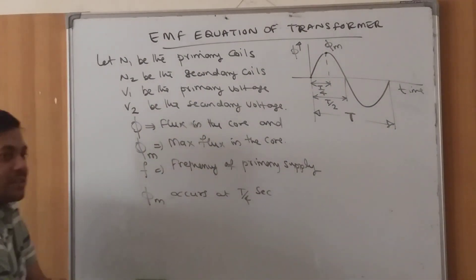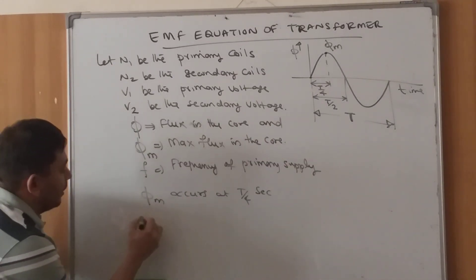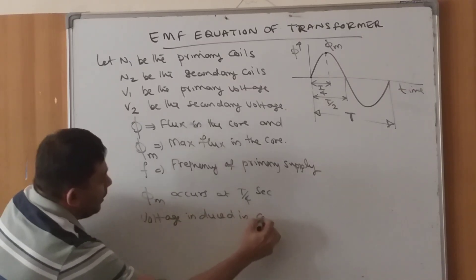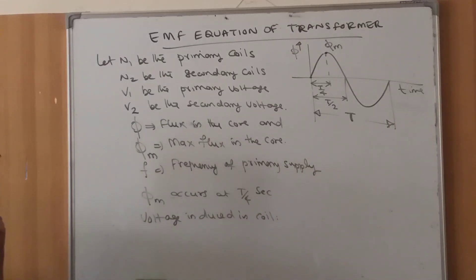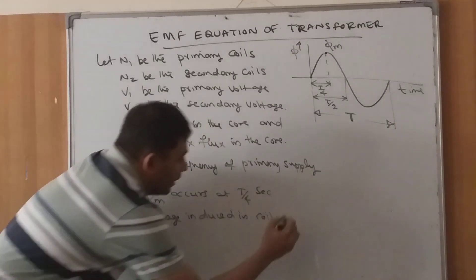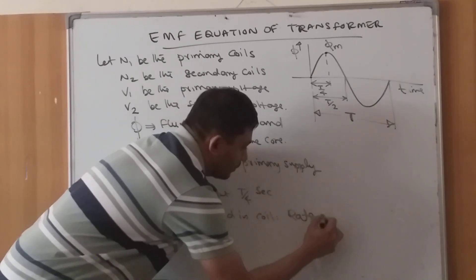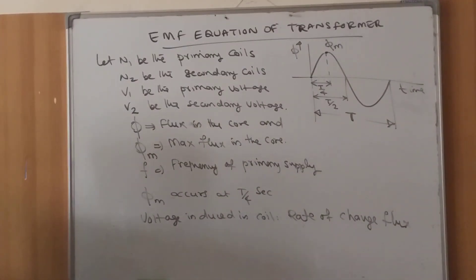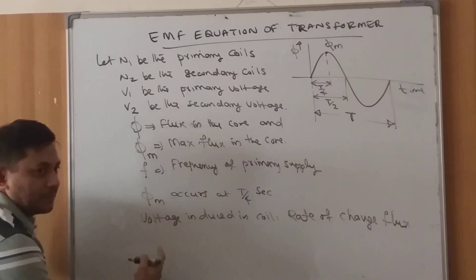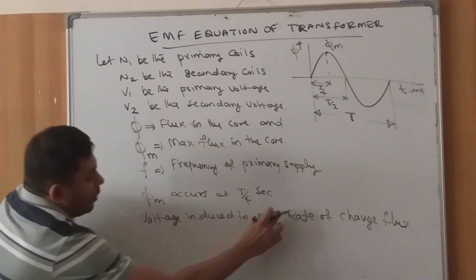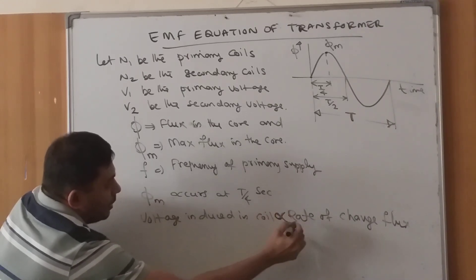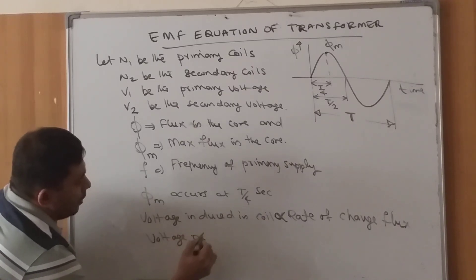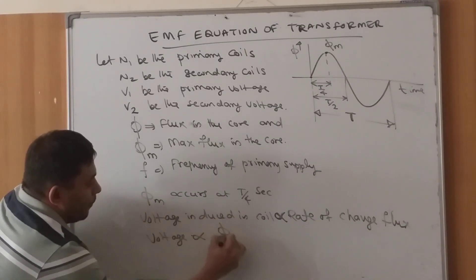Now we want to know the rate of change of flux, because as per Faraday's law of electromagnetic induction, the voltage induced in a coil is proportional to the rate of change of flux — that is, the change of flux with respect to time.